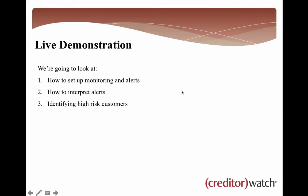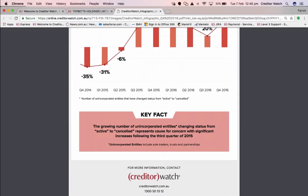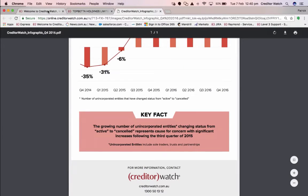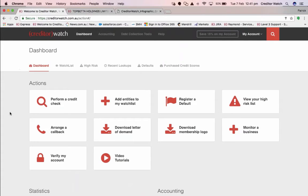So let's get into the live demonstration. A few things we're going to look at: how to set up monitoring and alerts, how to interpret those alerts, and also we're going to look at identifying high-risk customers as part of that monitoring process. This is your CreditorWatch dashboard — for those of you that aren't members, this is what it looks like.